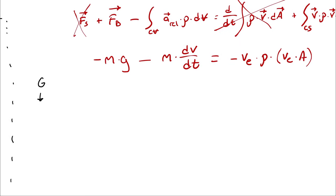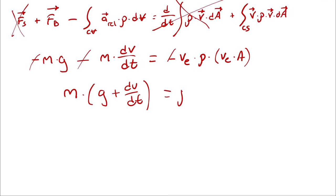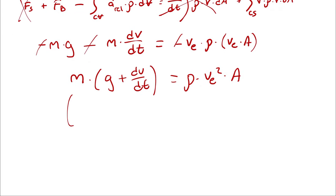Then I have, let's see, I can factor the mass, and I can get rid of all three negative terms. So, mass times gravity plus dv dt is equal to density times ve squared times area. And I recognize that the mass here is referring to mass of the rocket at some point in time. It's losing mass because it's combusting the stuff that it brought along with it. That's the propellant and the oxygen.